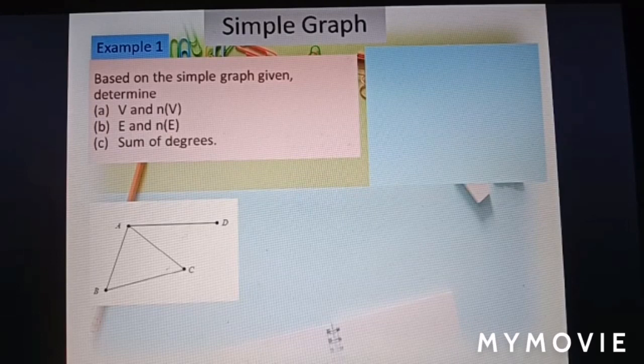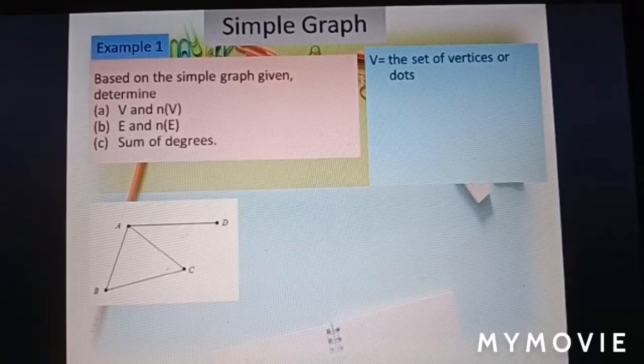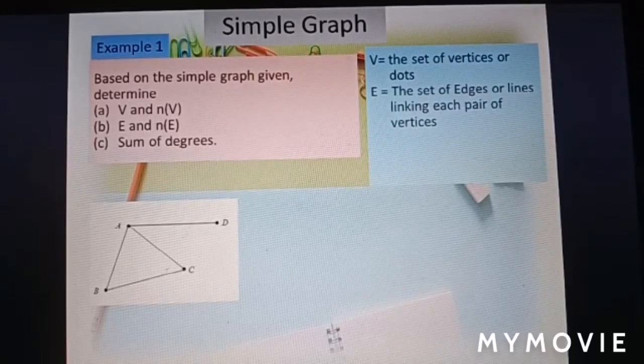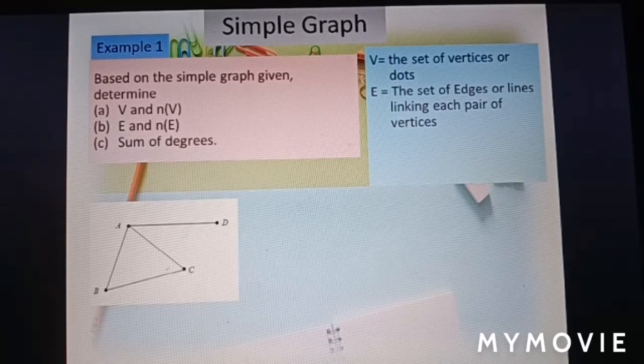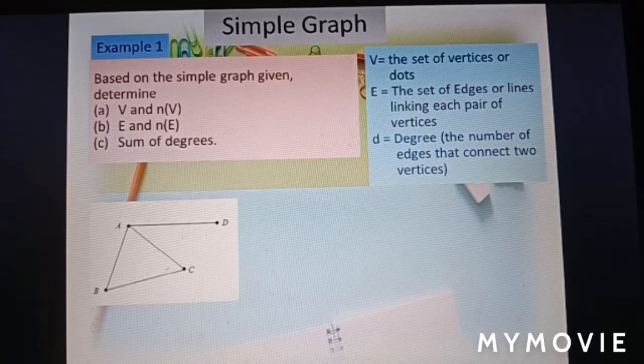Before we discuss example 1, we need to know some important terms. V, the set of vertices or dots. E, the set of edges or lines linking each pair of vertices. D, degree, the number of edges that connect to vertices.